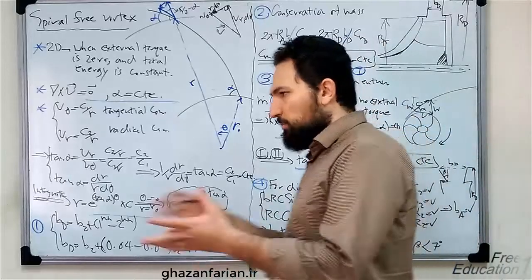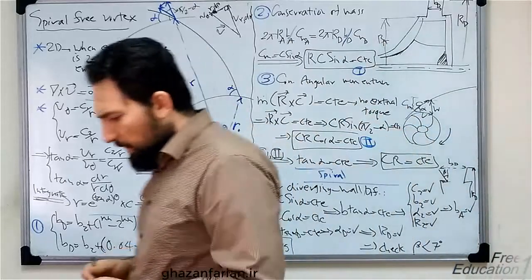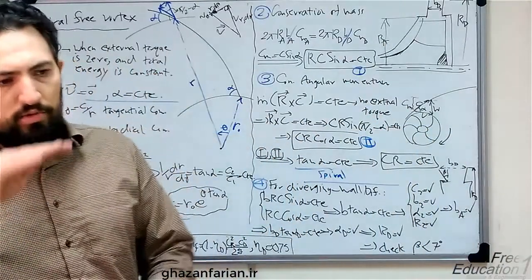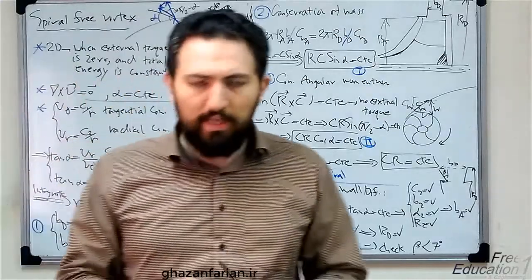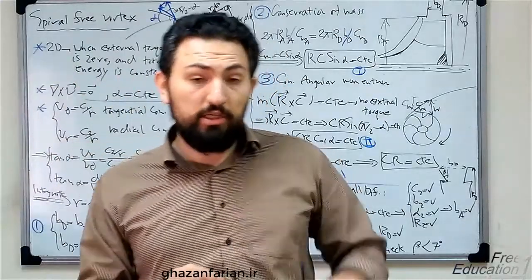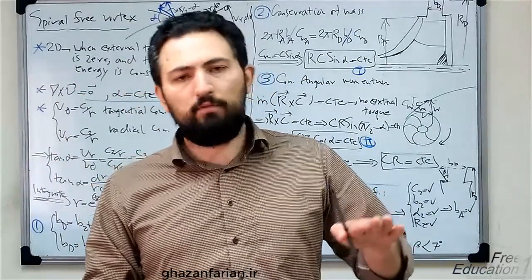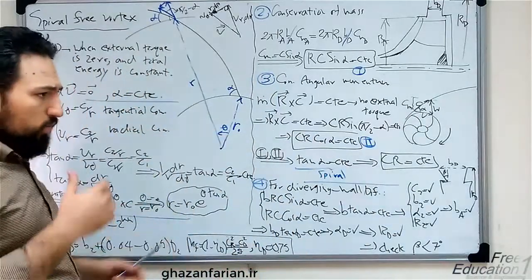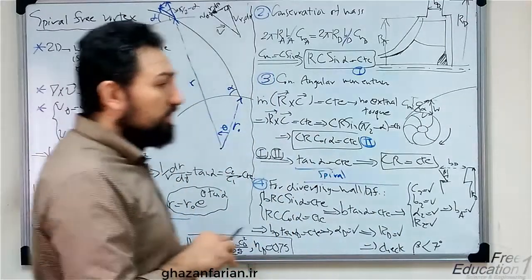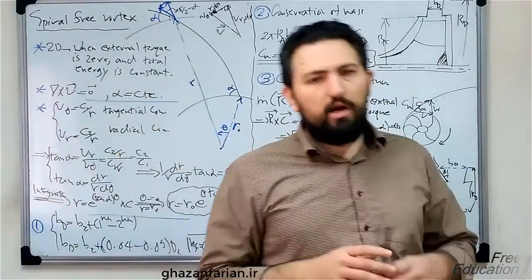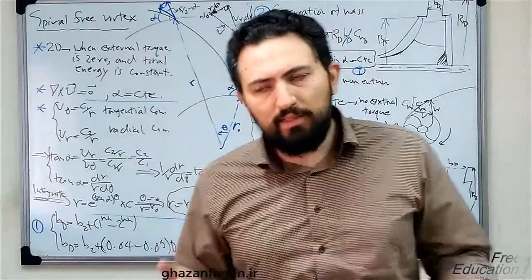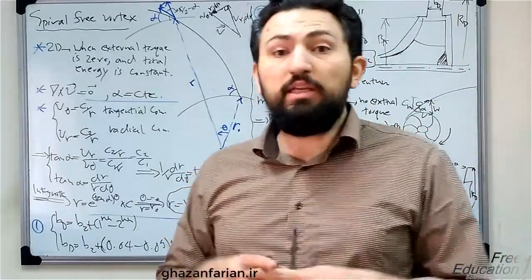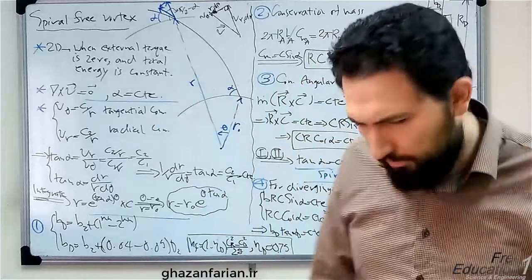Diffusers are elements in turbomachinery which help us to recover — it means to reduce the magnitude of velocity and to increase the pressure of the fluid. This way we can decrease the hydraulic losses and consequently increase the efficiency of the pump.